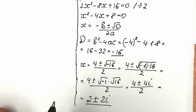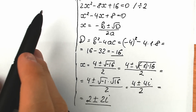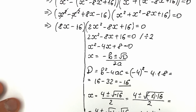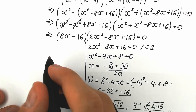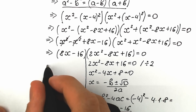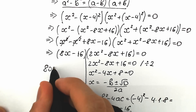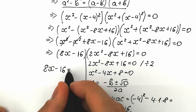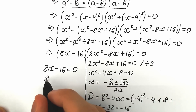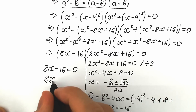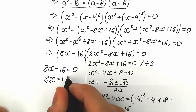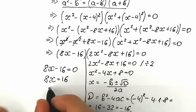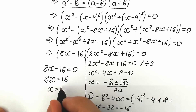But first let's find our real root. We had the first factor: 8x minus 16 equals 0. From here, 8x equals 16, and x equals 2.